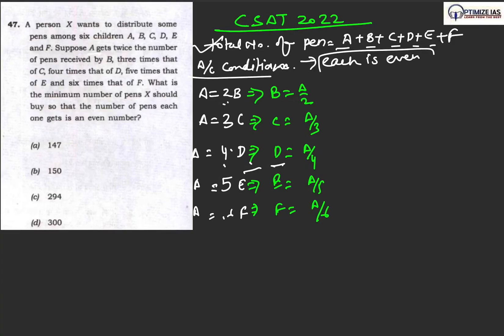Hello everyone, welcome to Optimize IAS. We are doing the quant questions from the CSAT 2022. Here is the question: a person X wants to distribute some pens among six children A, B, C, D, E, and F. Suppose A gets twice the number of pens received by B, three times that of C, four times that of D, five times that of E, and six times that of F. What is the minimum number of pens X should buy so that the number of pens each one gets is an even number?